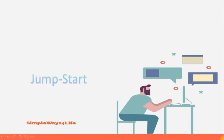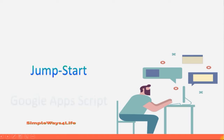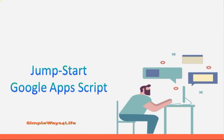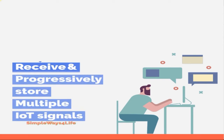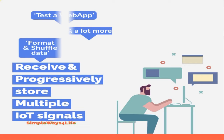Hello and welcome again to Simple Ways. We are going to build on our experience with web apps and Google Sheets. We continue from what we started in the last two sessions — we had seen how to deploy an app, make versions, and jump between versions. In the first video we saw how to receive simple information from our web app like the IoT service.